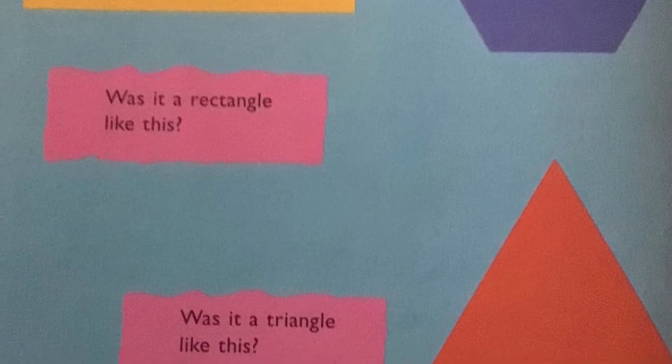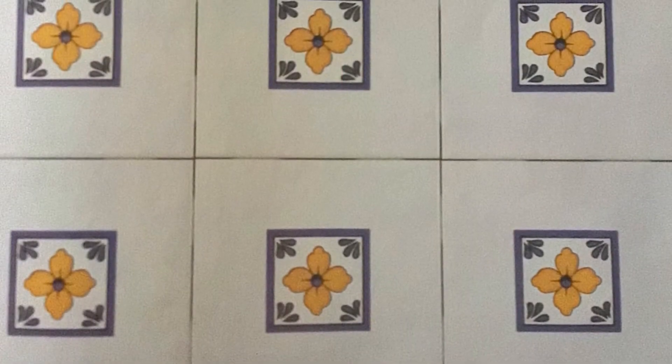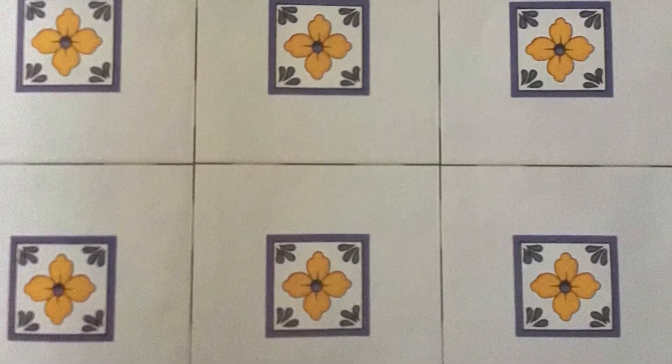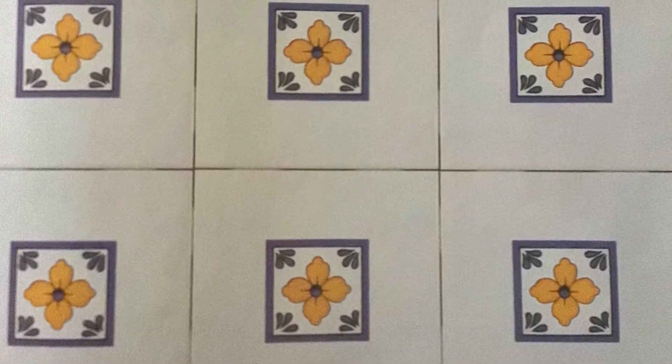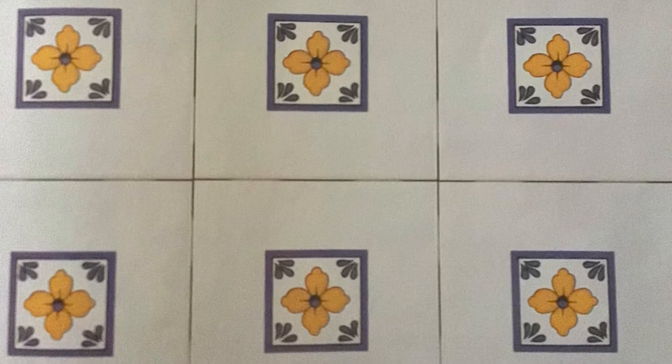Was it a square like this, or was it a circle like this? Was it a hexagon like this? Was it a rectangle like this? Was it a triangle like this? Squares, circles, triangles, rectangles, and hexagons are regular shapes. Each shape is easy to recognize.